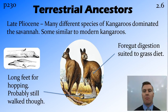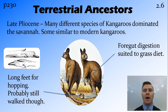We have these long feet for hopping, although at this time they're probably still doing that bounding motion similar to the semi-arboreal stage. But a big development that is very important here is foregut digestion. That past ancestor similar to the possum would have had hindgut digestion, but to get nutrients out of grass — which isn't very nutritious — having foregut digestion is a huge advantage.